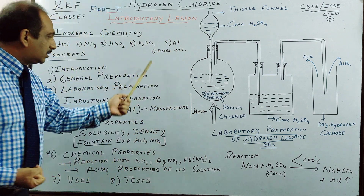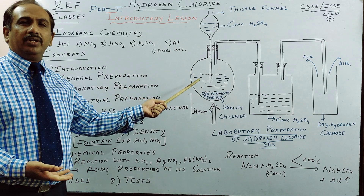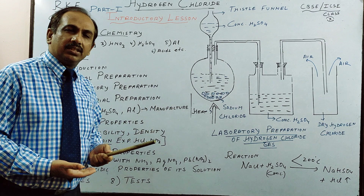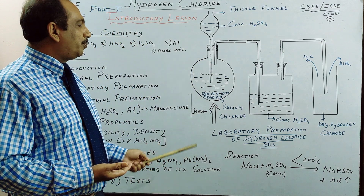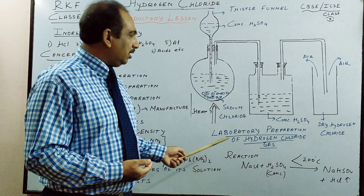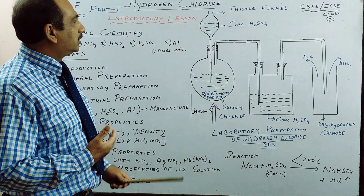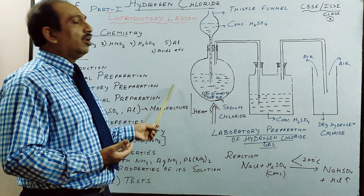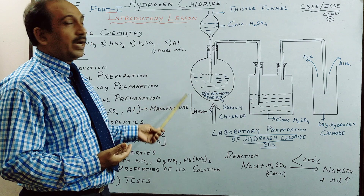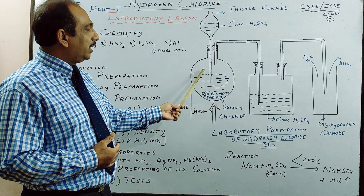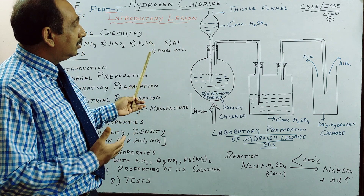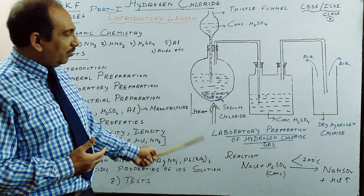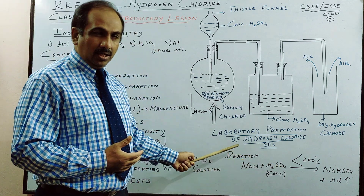I may have two or three video lessons on this, then we will go to ammonia, then nitric acid and sulphuric acid. Here, how we prepare hydrogen chloride gas in the laboratory. We have a round-bottom flask where we heat it. I am explaining the main things required for laboratory preparation of hydrogen chloride gas. What are the reactants? We take sodium chloride. Out of all chlorides, this is the cheapest. And we take concentrated sulphuric acid — remember, concentrated is very important.